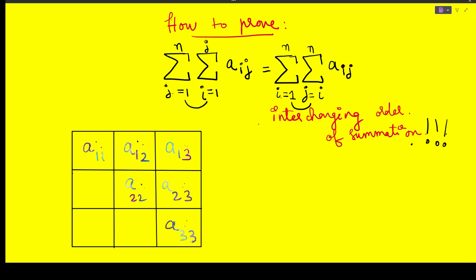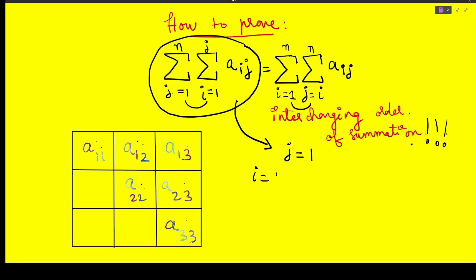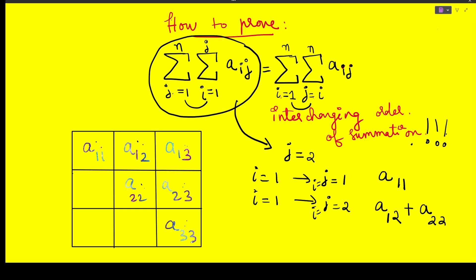So this is interchanging the order of summation. Let's prove it starting with the left-hand summation. Fix j = 1, then i varies from 1 to j, which is 1, so this summation is just a₁₁ — only one element. Now change j to 2: i varies from 1 to 2, and j is fixed at 2, giving a₁₂ + a₂₂.